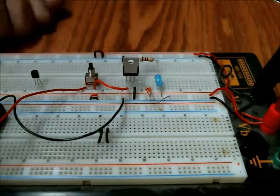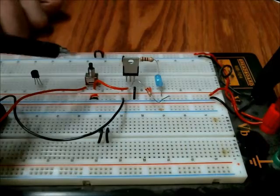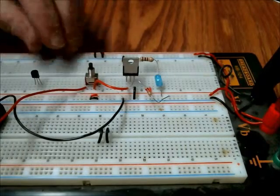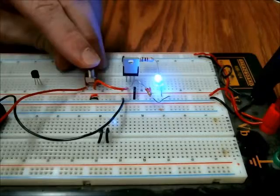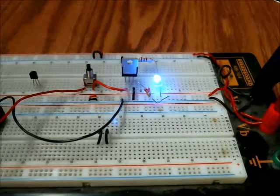So here's the actual circuit of the schematic I just showed you. And here's the push button switch. So I press that, the LED comes on, and I release it, and the current continues to flow through the SCR.